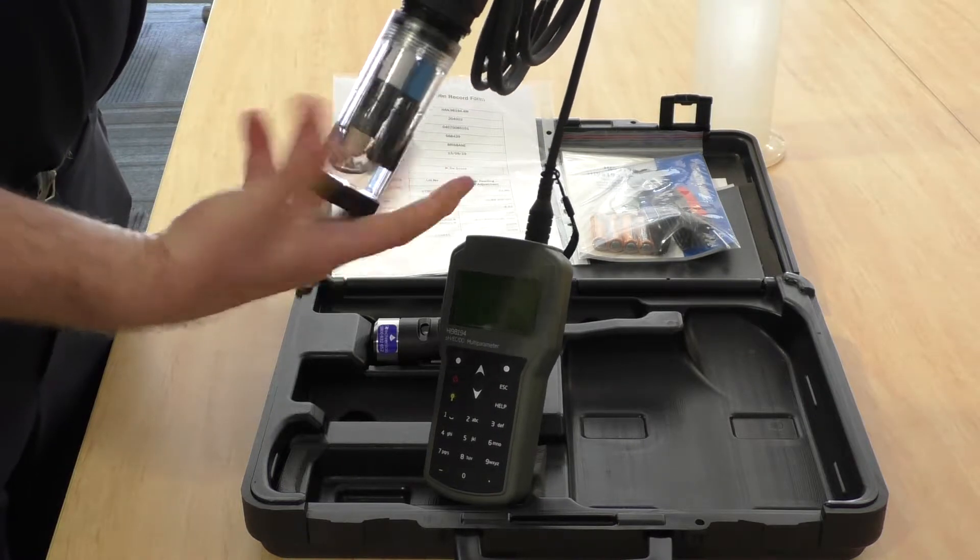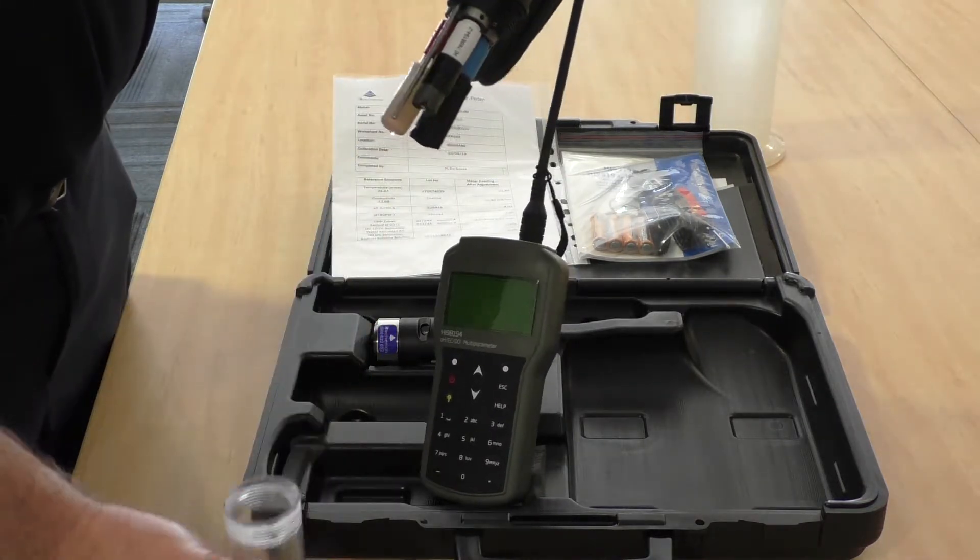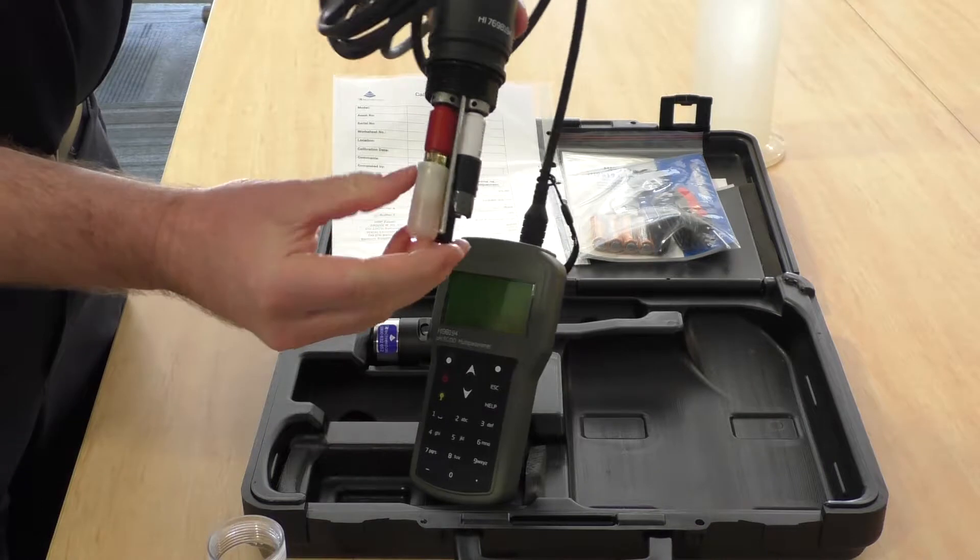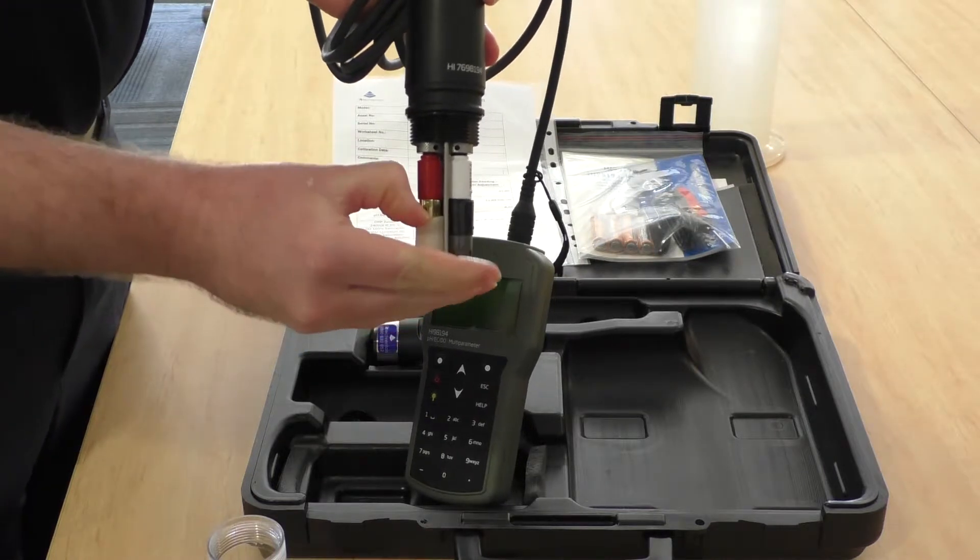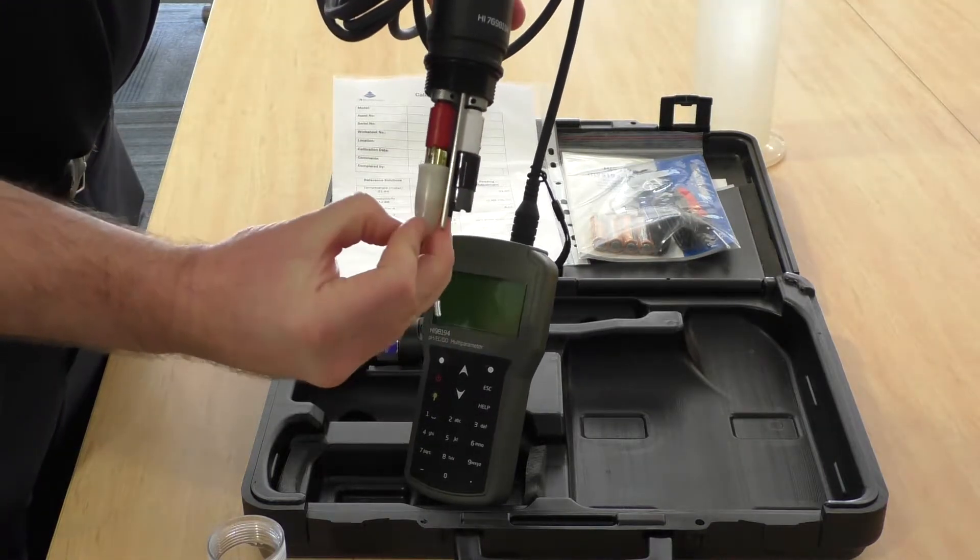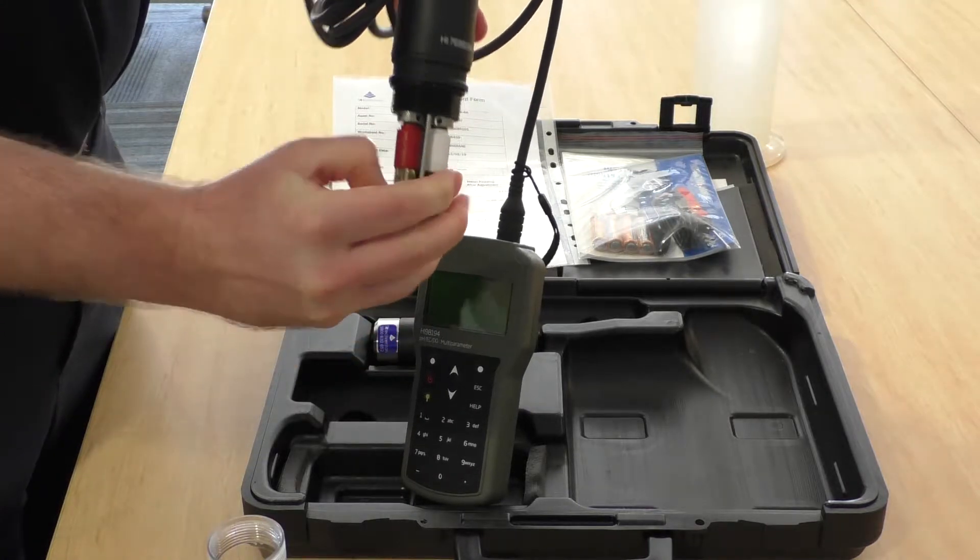If we take that off, we can see the pH sensor has got its own special wetting cap on. The best way to store that is with some pH 4 solution in it.